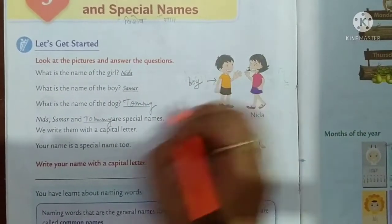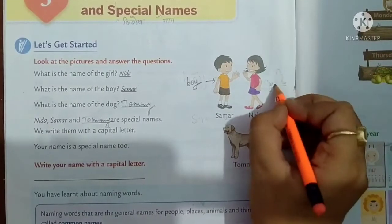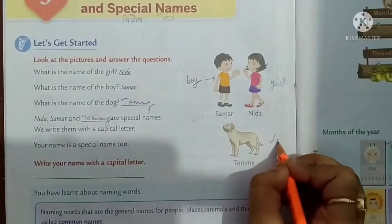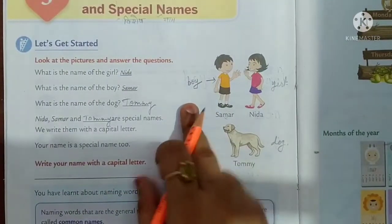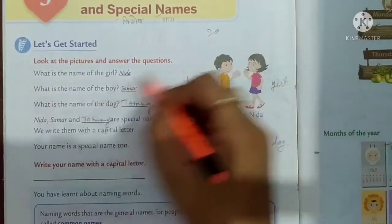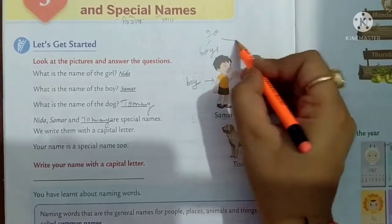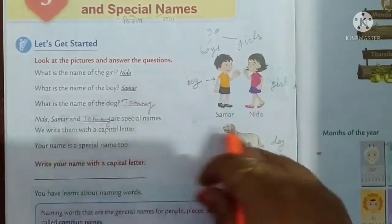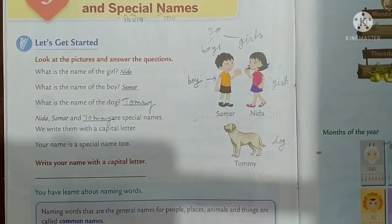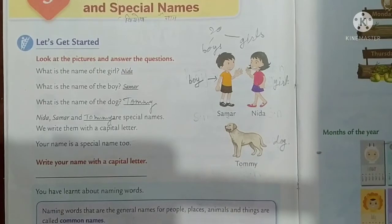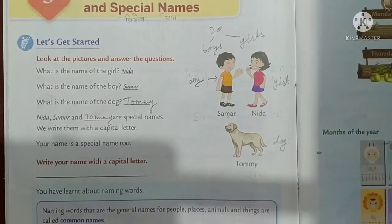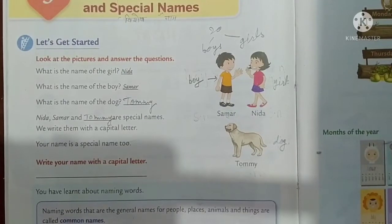Boy is a common name. This is a girl and a dog — these are also common names. If we call boys in class, we have 10 boys and 10 girls. If we say 'boys come here,' we are using a common name.